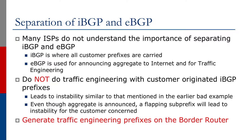Do not do traffic engineering with customer-originated IBGP prefixes, as this leads to instability, as mentioned in the earlier bad example. Even though the aggregate is announced, a flapping sub-prefix will lead to instability for the customer concerned. Traffic engineering prefixes should always be generated on the border routers.